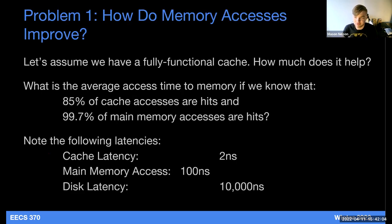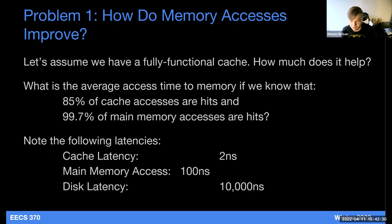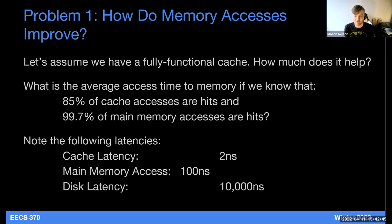We'll start with the warmup problem, the first problem on the worksheet for this week. We're not really thinking about all the ins and outs of virtual memory just yet. We have a program where 85% of cache accesses are hits, 99.7% of the time we get a hit in main memory, and the rest of the time we go to the disk. Notice that the 99.7% is only calculated within the time that we miss in the cache. We're going to focus on miss rates rather than hit rates.